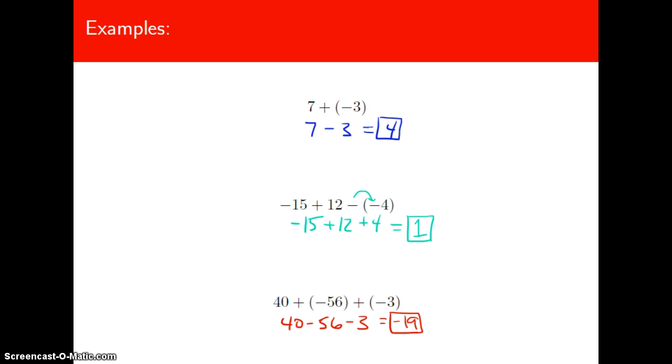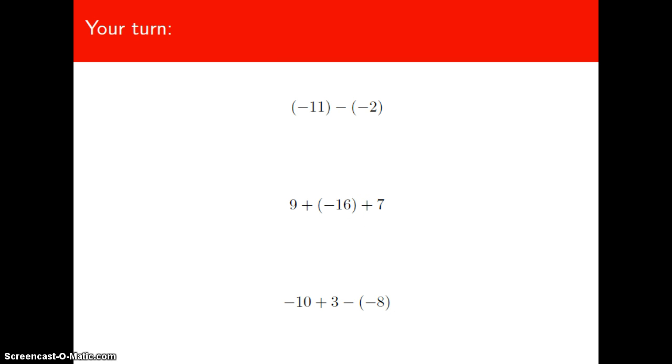So I'll go back to that money model again that I like. If you take $40 and then you take 56, so if I give you $40, I should say, and I take $56 away from you, I owe you $16. And if I take three more, that's a negative 19.